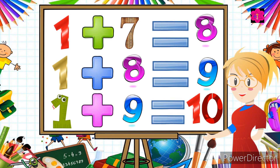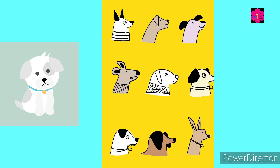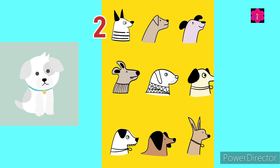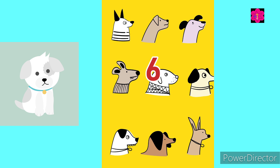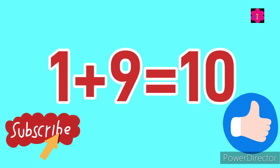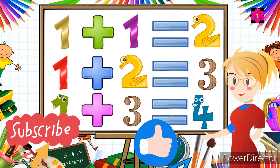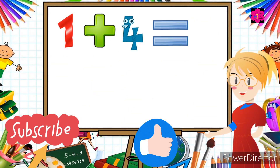There is one dog, now we add nine more dogs. Let's count together: one, two, three, four, five, six, seven, eight, nine, ten. One plus nine is equal to ten! That's it for today's video. Keep practicing at home!